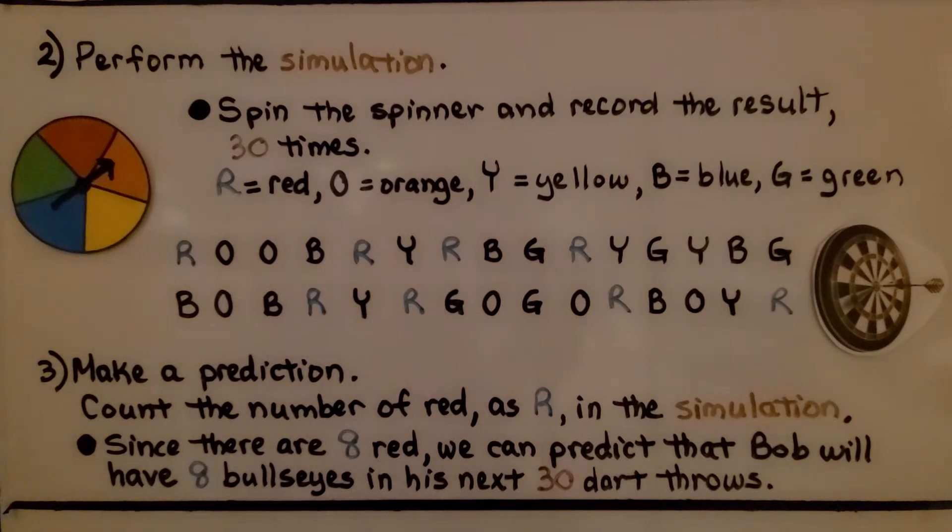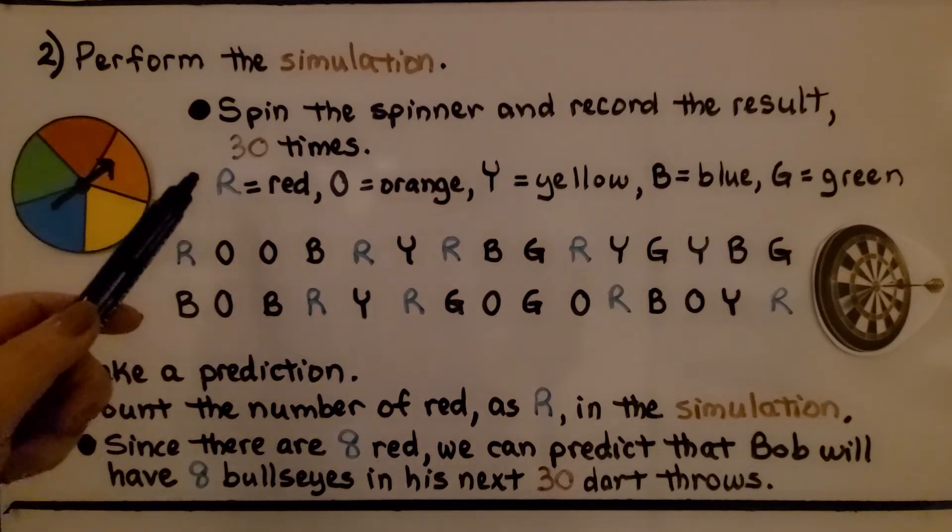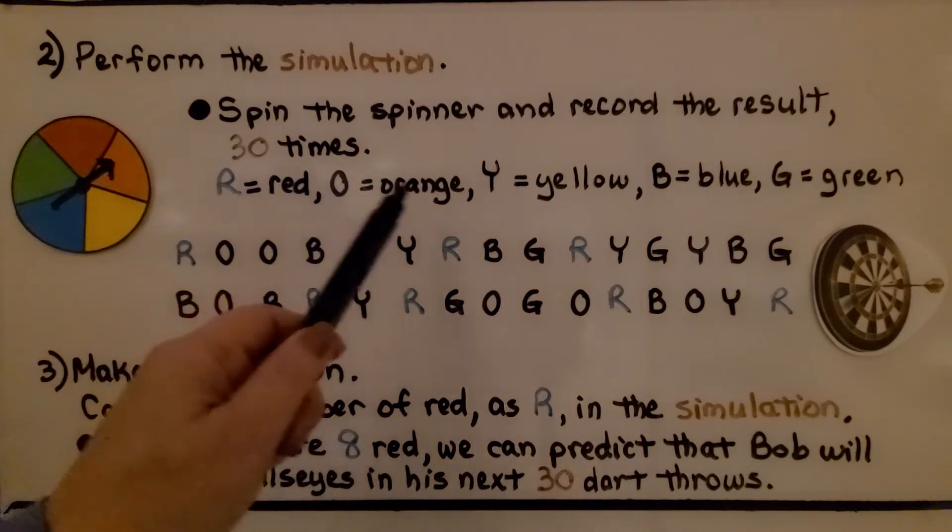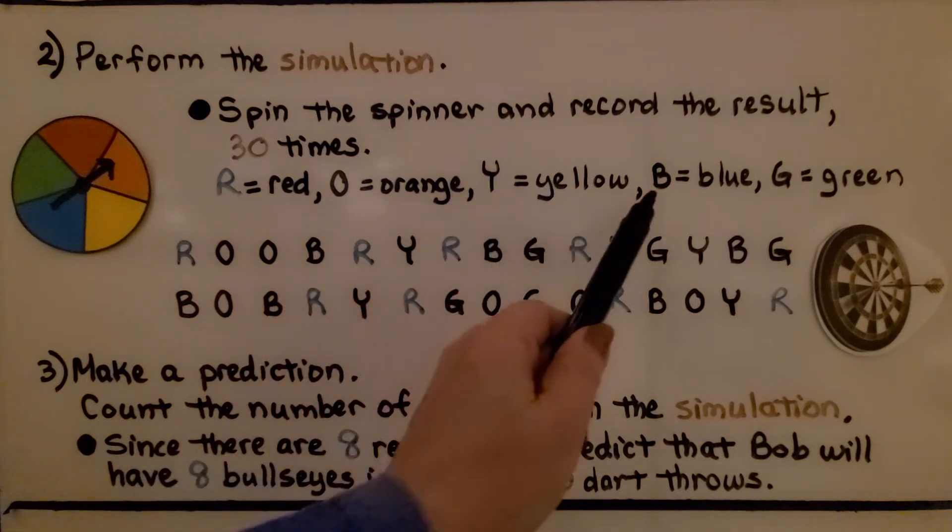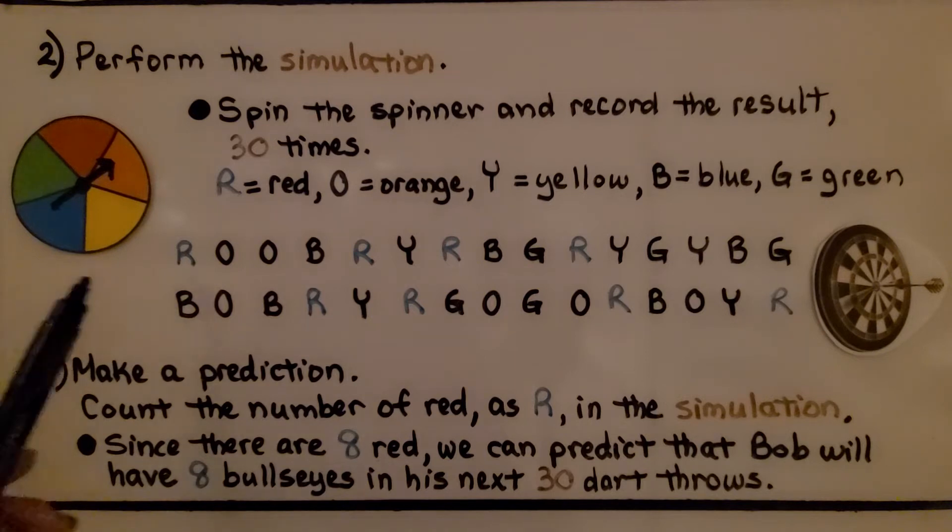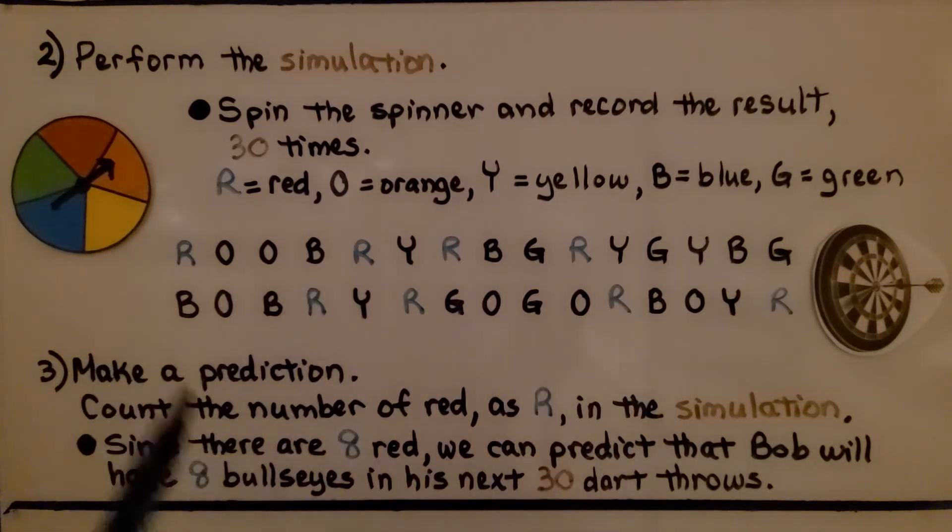The second thing we do is perform the simulation. We spin the spinner and record the result thirty times because he's going to have thirty dart throws. We're going to let r equal red, o equal orange, y will equal yellow, b will equal blue, and g will equal green. We spin it thirty times and these are the results that we get.